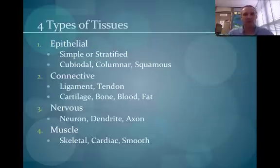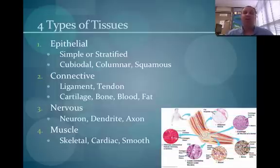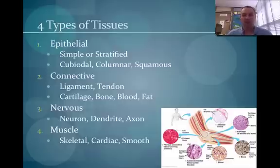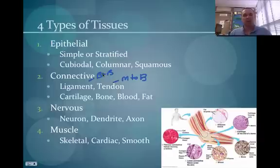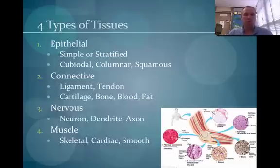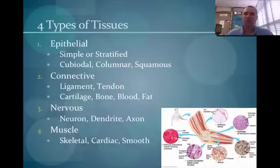Now let's look at connective tissue. There are six different types. Fibrous connective tissue includes tendons — tendons connect muscle to bone, like the Achilles tendon connecting the calf muscle to the heel bone. Ligaments are loose connective tissue that connect bone to bone, such as the ACL across the knee. Cartilage is fibrous material like in your ears or nose — not quite bone but provides support. Then there's bone, blood, and adipose tissue — or fat — all of which are also classified as connective tissue.